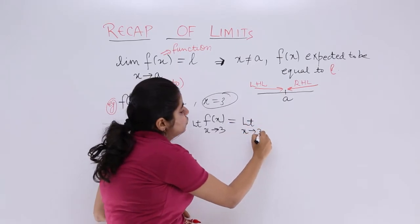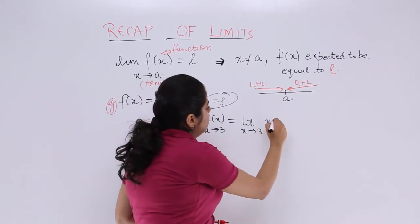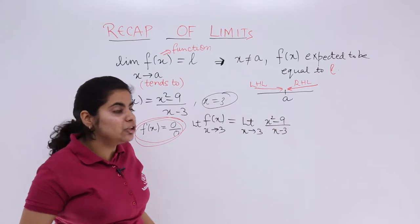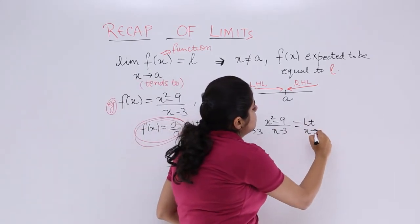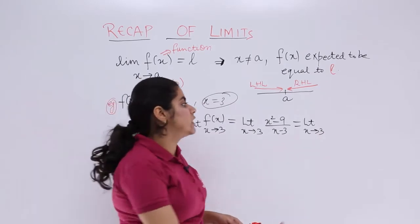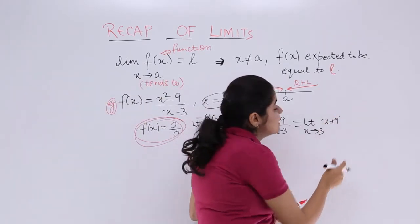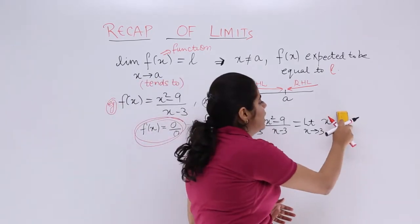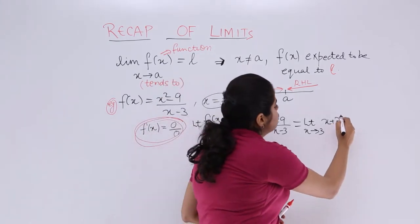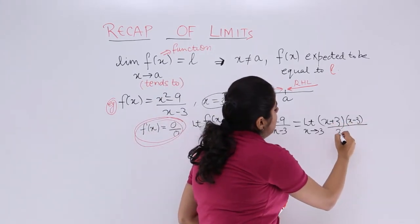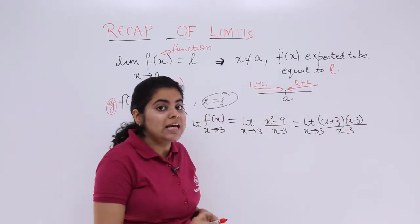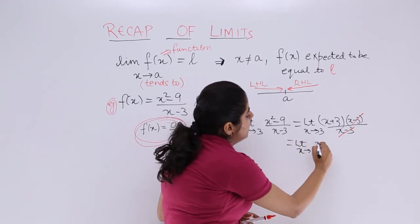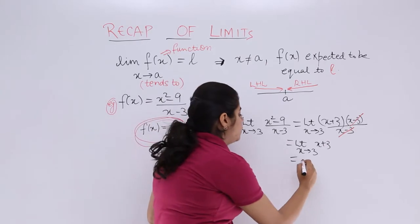It is lim x→3 of (x²-9)/(x-3). To solve this, we factorize the numerator. x²-9 can be split as (x+3)(x-3) using the formula a²-b² = (a+b)(a-b). So it becomes lim x→3 of [(x+3)(x-3)]/(x-3). Things get cancelled and we get lim x→3 of (x+3). Substituting 3, we get 6.